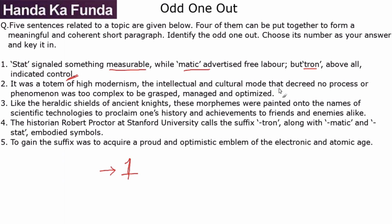Sentence two reads: 'It was a totem of high modernism — the intellectual and cultural mode that decreed no process or phenomenon was too complex to be grasped, managed, and optimized.' We are not very sure what 'it' refers to or what is being talked about here, but we will come back to it.